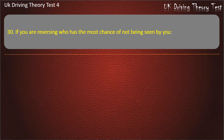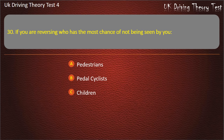Question 30. If you are reversing, who has the most chance of not being seen by you? Pedestrians, pedal cyclists, children, or motorcyclists. Answer: Children.